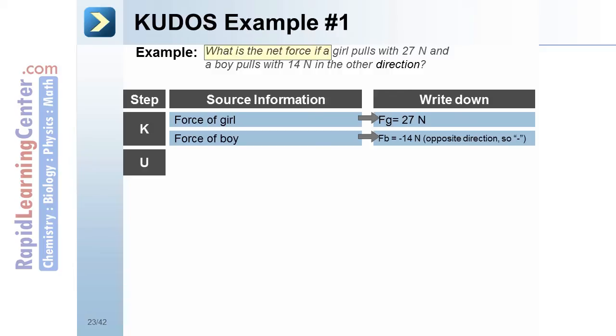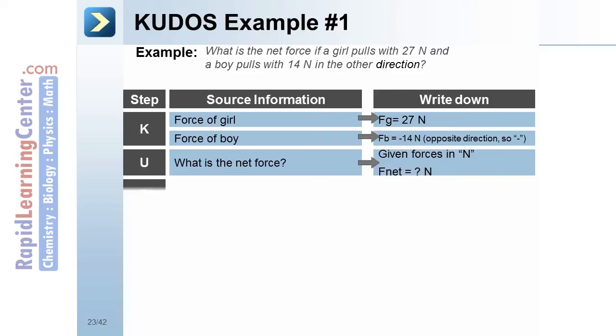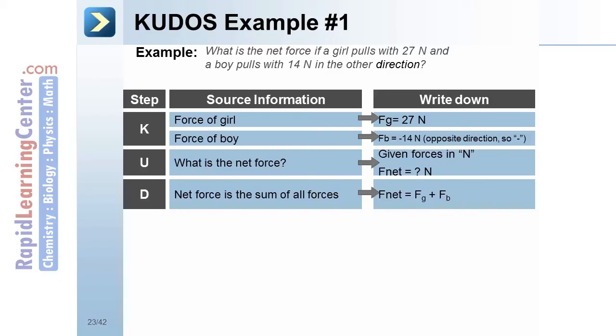The unknown. We are looking to find the net force, F net. The definition. You need to recall that the net force is the sum of all the forces acting on an object. The output.